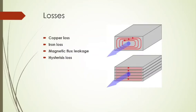The third one is magnetic flux leakage. Not all the flux produced by the primary is associated with the secondary coil. A small amount of energy supplied to the primary may be wasted due to this leakage. That is why the shell type transformer is more preferred than the core type transformer.